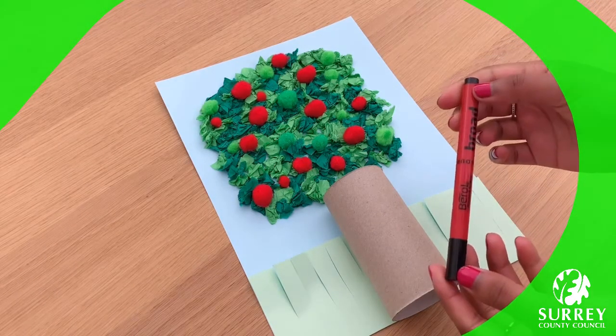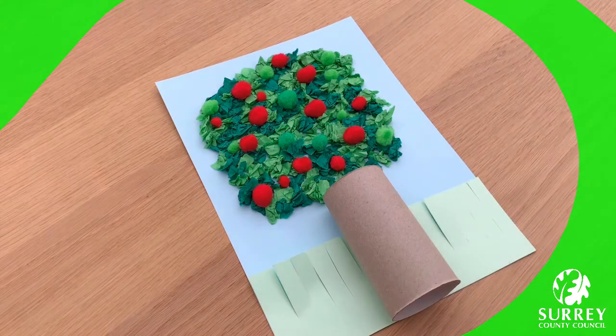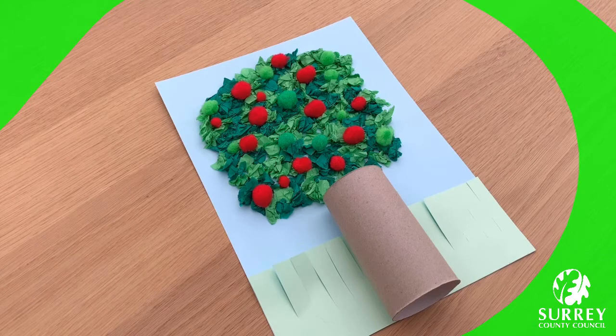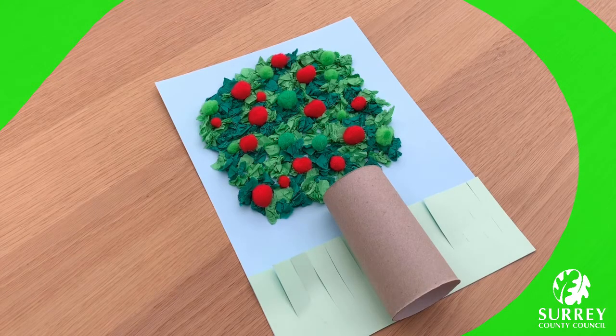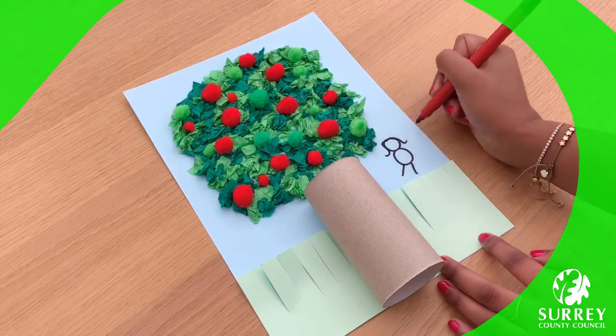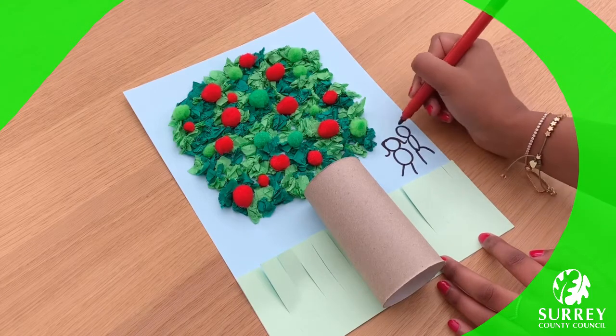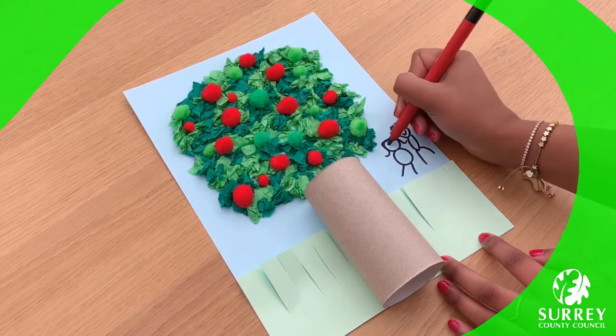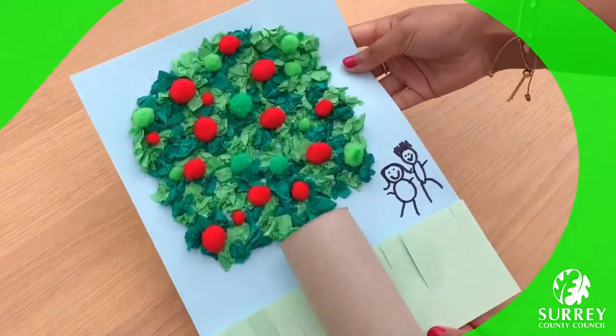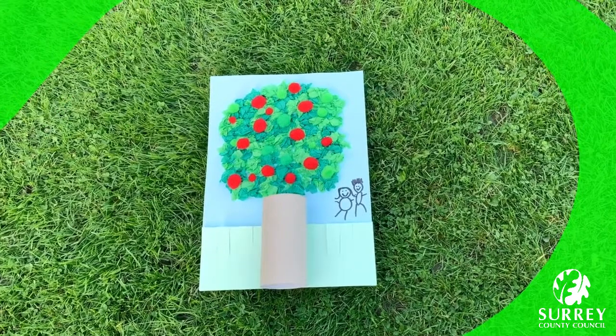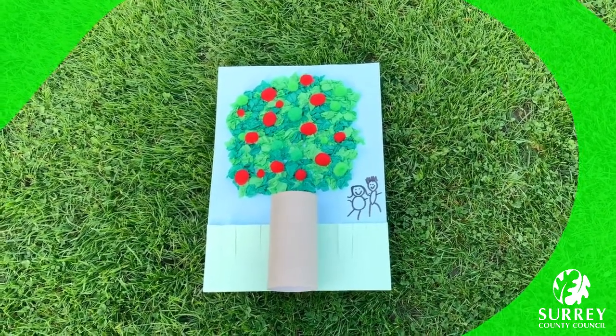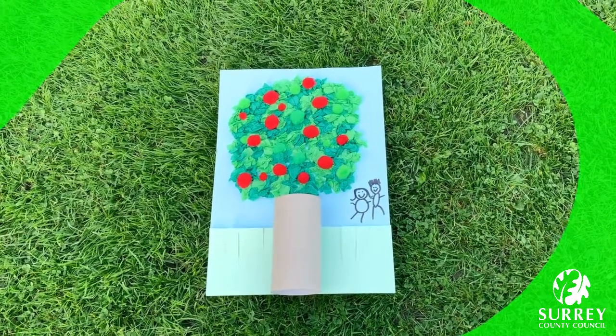You can also use a black felt tip marker and draw some people under the tree. You can use your own imagination and draw whatever you like! I think I'm going to draw some lovely stick people! And that's it! Your lovely apple tree! I wonder what yours looks like! Make sure you send us photos so that I can see!